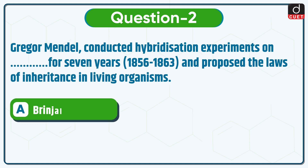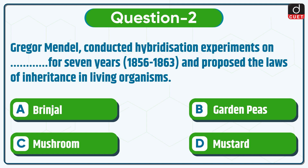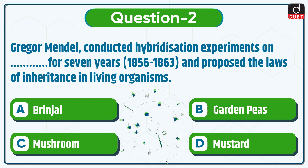Next question is: Gregor Mendel conducted hybridization experiments on which plant for 7 years, i.e. 1856–63, and proposed the laws of inheritance in living organisms? Brinjal, Garden Peas, Mushroom, or Mustard? The correct answer is option B, Garden Peas.